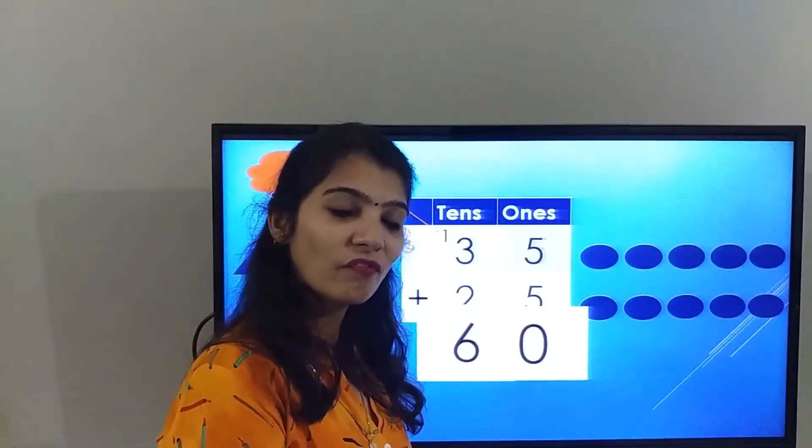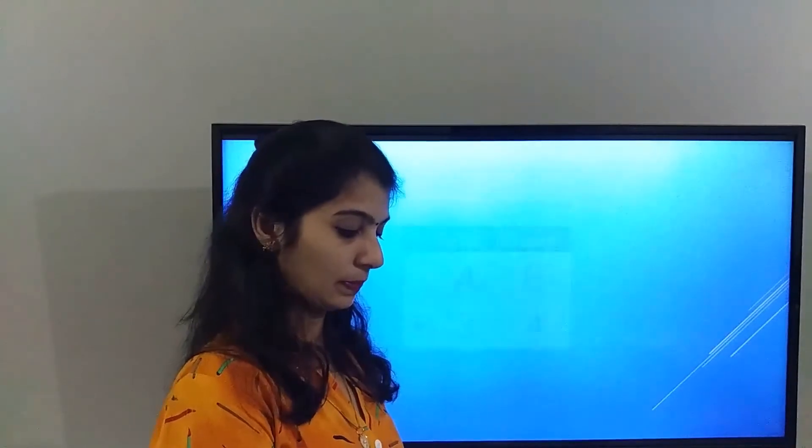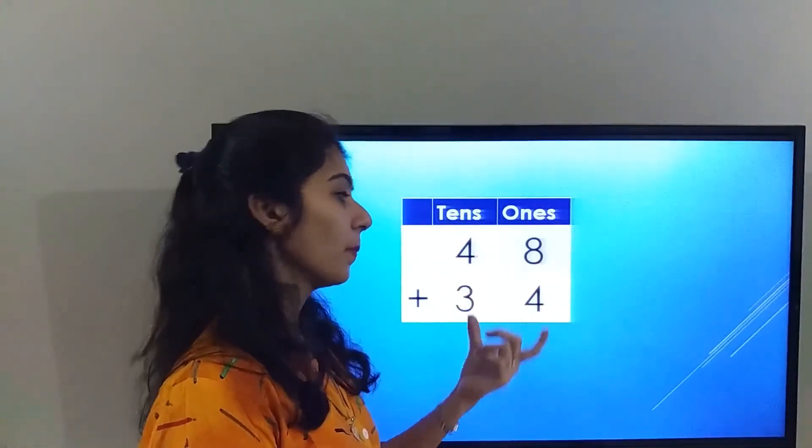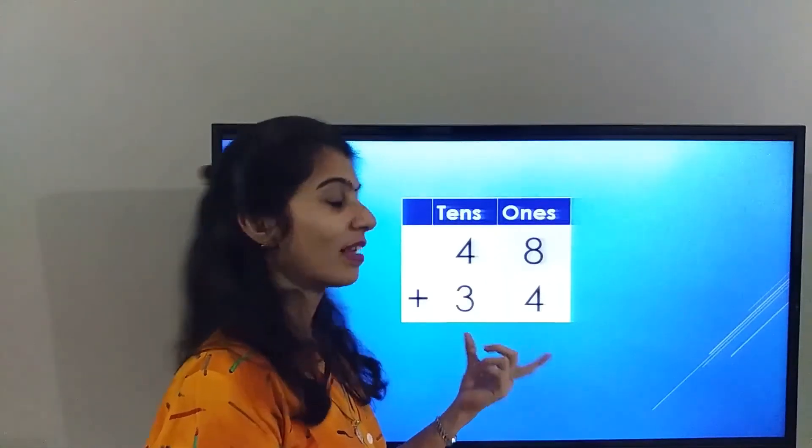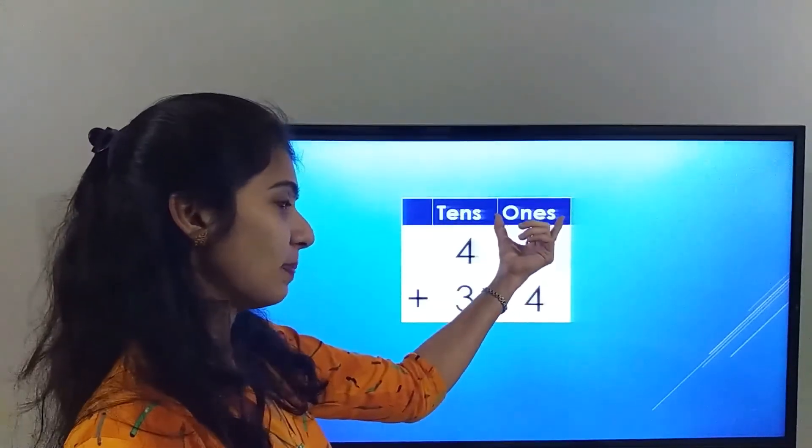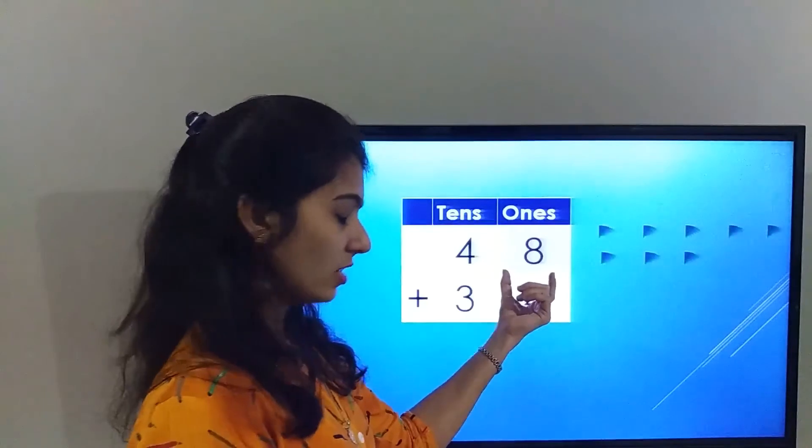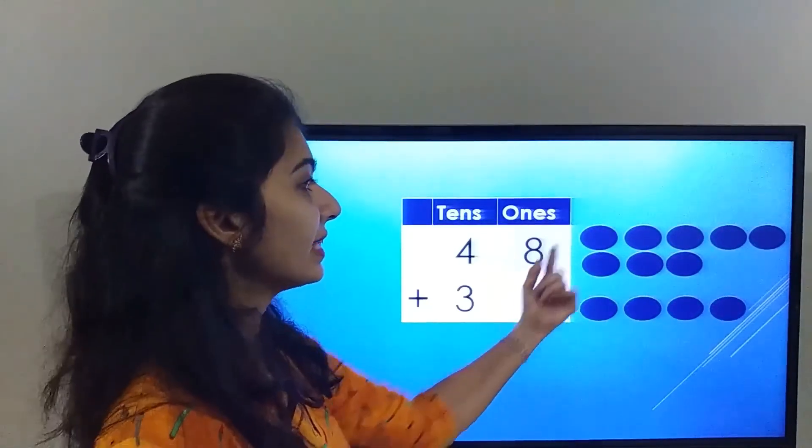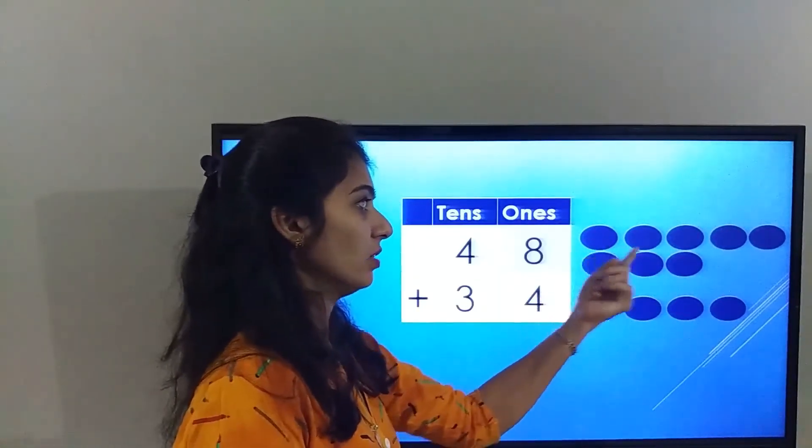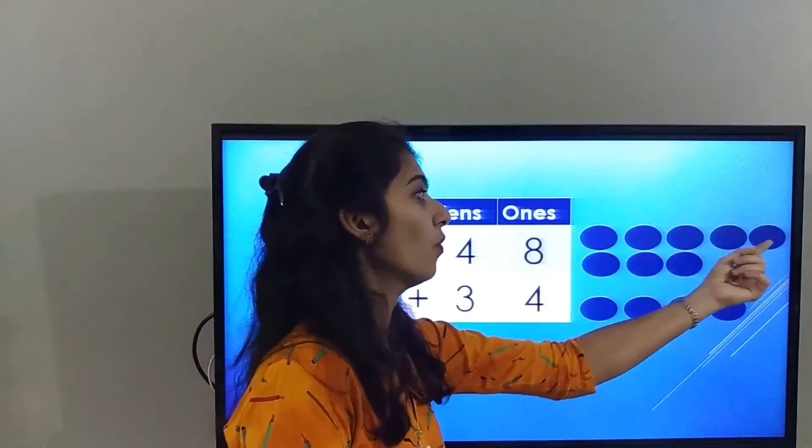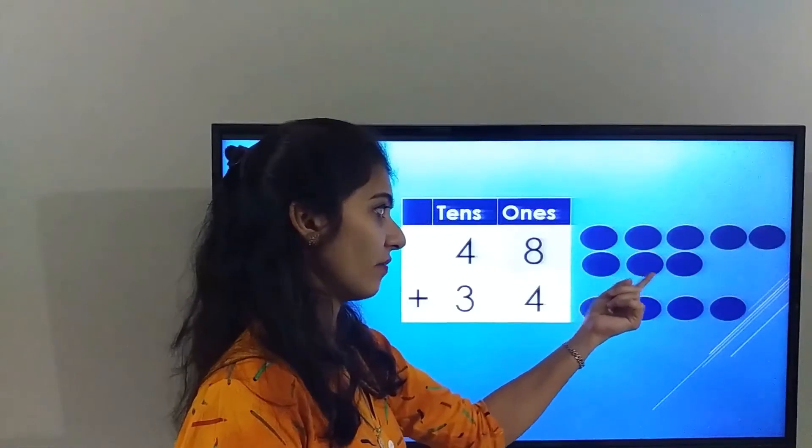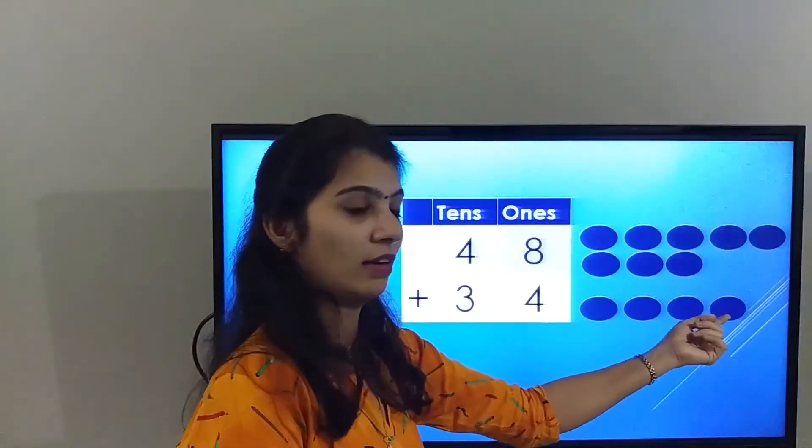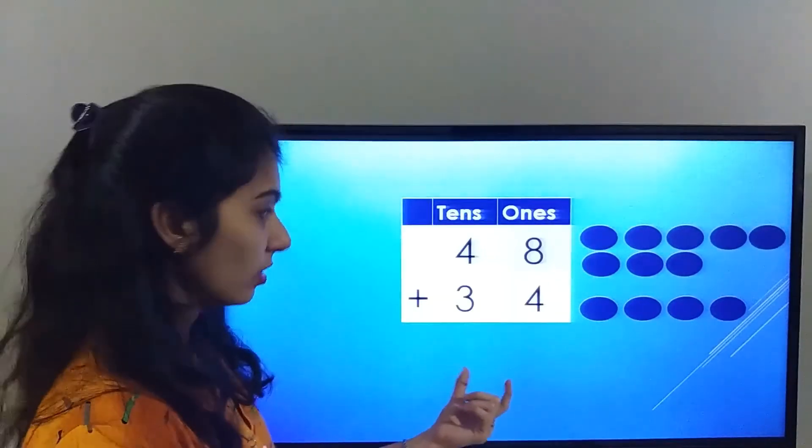Now let's solve one more sum. The number on the screen is 48 plus 34. Let's solve the ones place first: 8 plus 4. Let's count all the balls together: one, two, three, four, five, six, seven, eight, nine, ten, eleven, twelve. So the answer is 12.